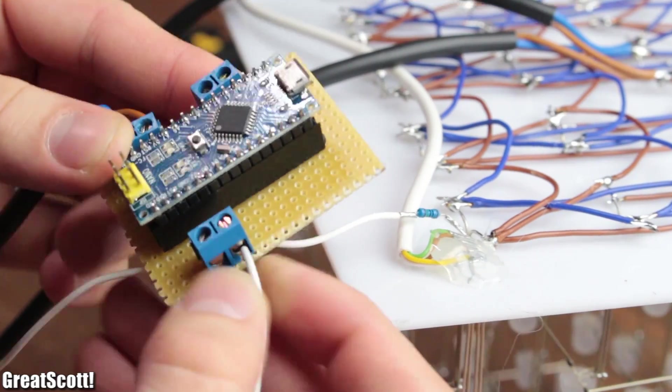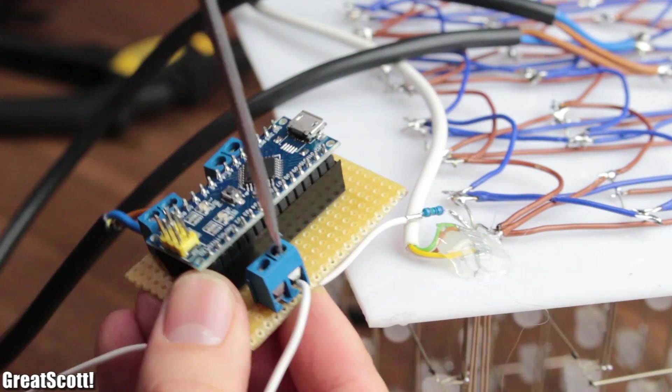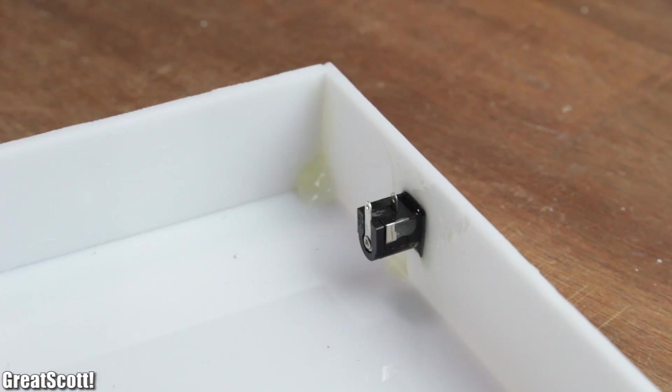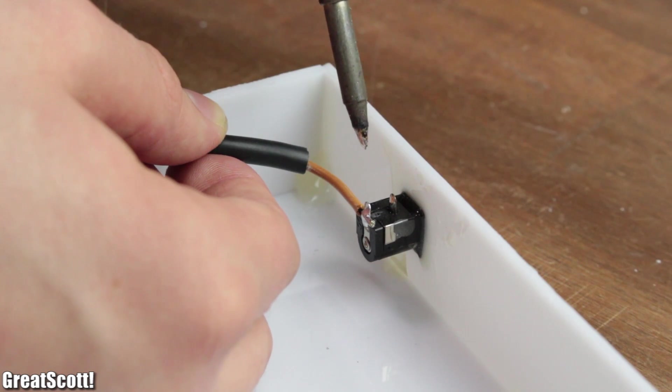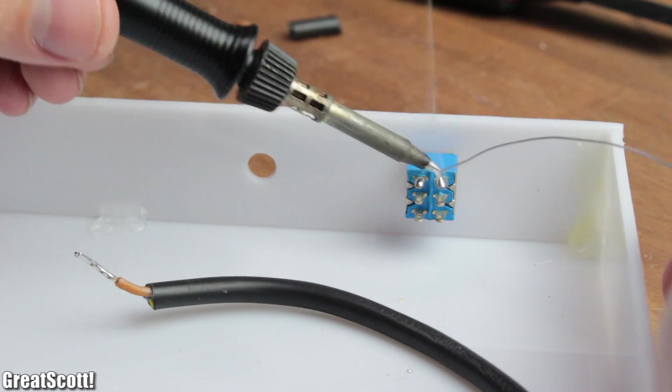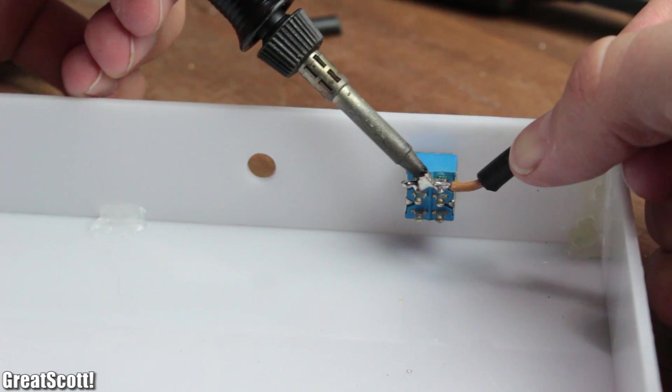Then the data wire gets secured to the D2 terminal block, and we can start the case wiring by soldering a wire to the tip pin of the DC jack. The other end of this wire then connects to one side of the main switch.